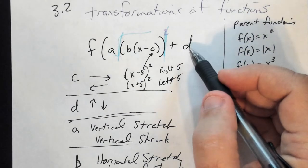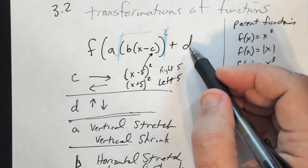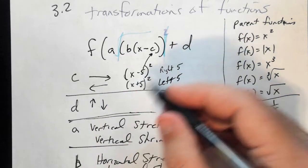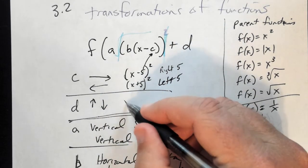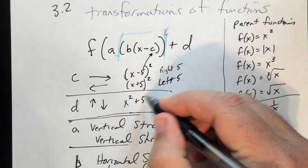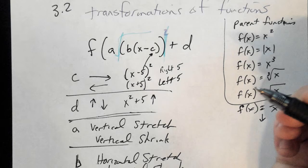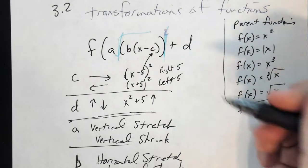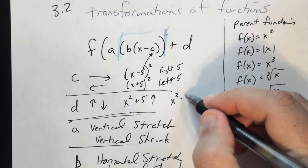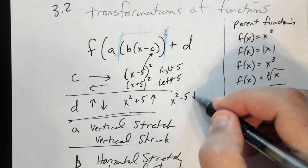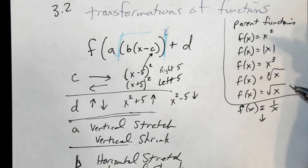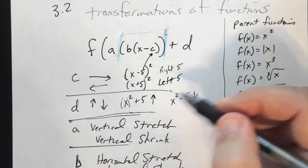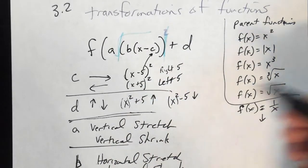The D value is either up or down. If it's x squared plus 5, it's up 5; if it's minus 5, it's down 5. This value is outside the parentheses.